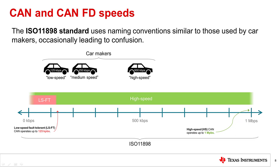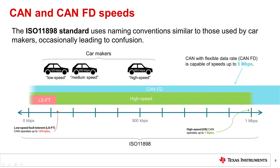Currently, many automobiles use classical high-speed CAN. CAN with flexible data rate, or CAN-FD, is an enhancement to classical CAN, which increases the usable bandwidth to as high as 5 megabits per second.